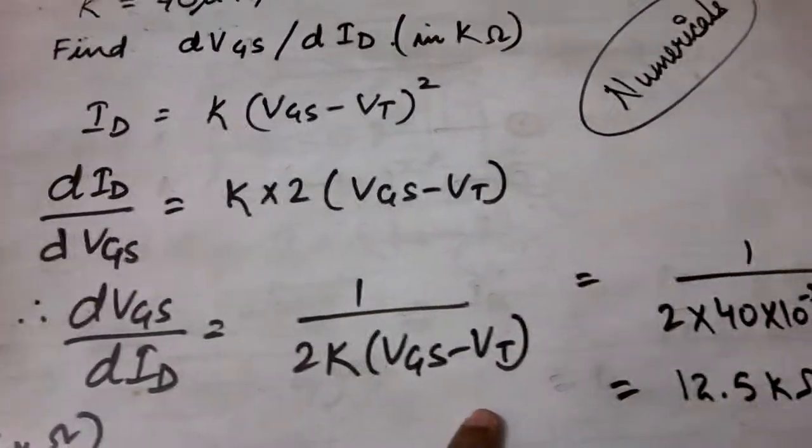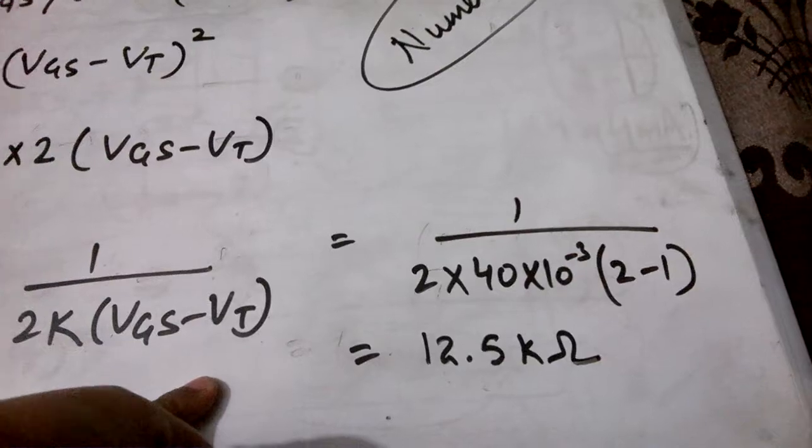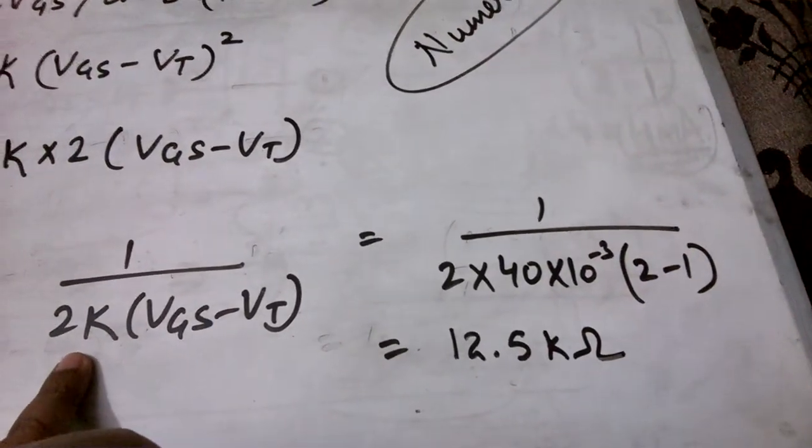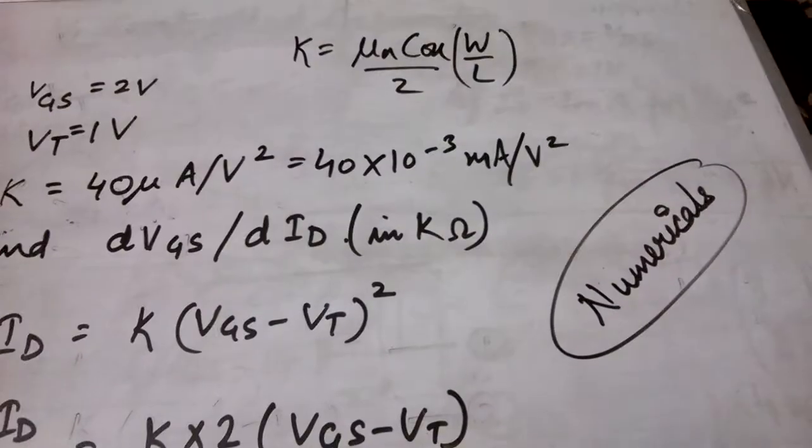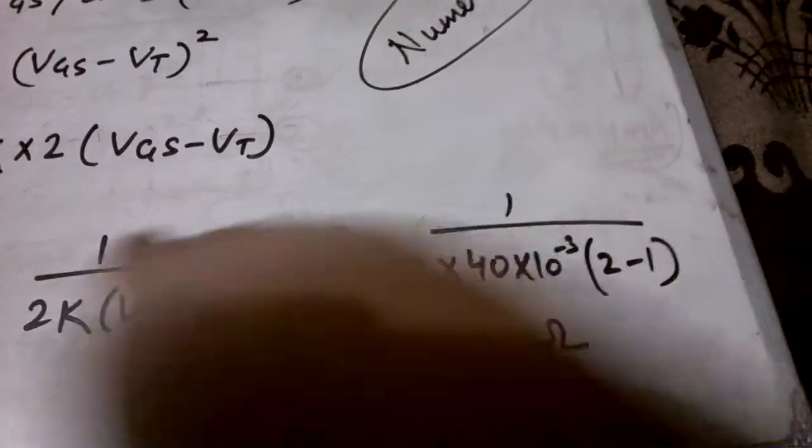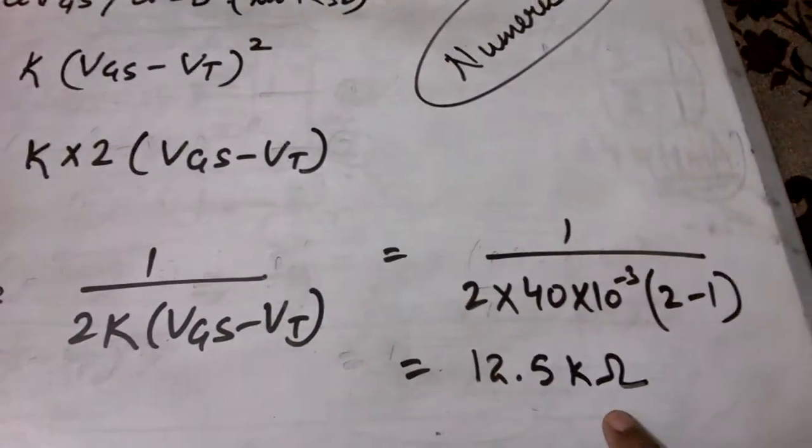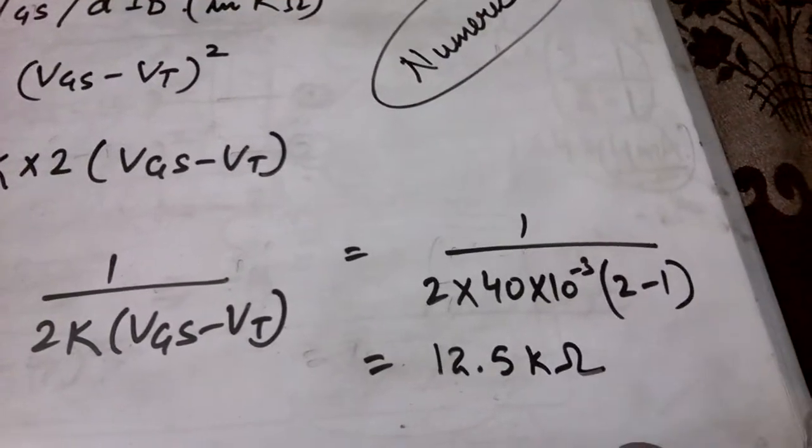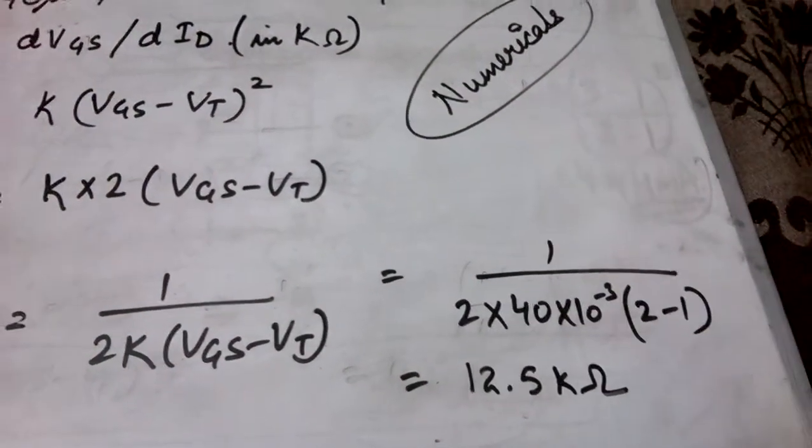Now we substitute the given values in this expression. If I put the value of K in milli ampere per volt square, then I get the result in kilo ohms. So the result is 12.5 kilo ohms. This way we can find out the resistance value of the MOSFET. Thank you.